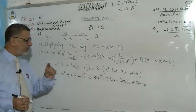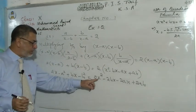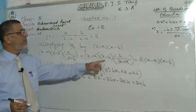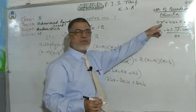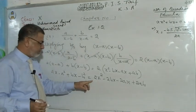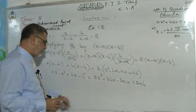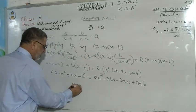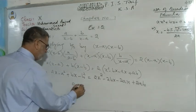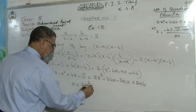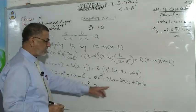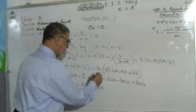Dear students, on the right-hand side you have the term 2x². The first term of the standard quadratic equation is the x² term — it is positive, so leave it on the right-hand side. Bring the left-hand side terms to the right: 2x² minus 2ax, and here is plus ax shifted to the other side becoming minus ax. Then minus 2bx, and here is plus bx shifted becoming minus bx.